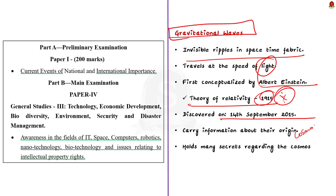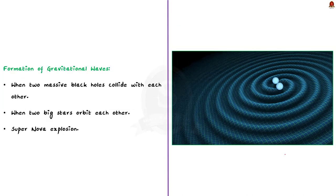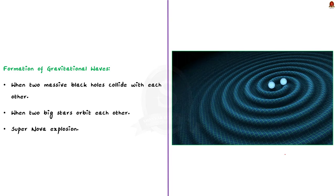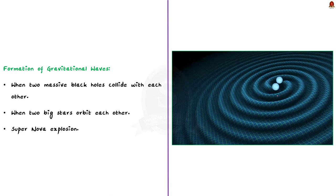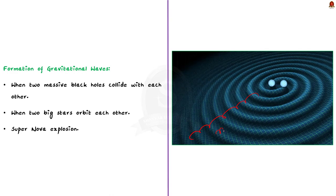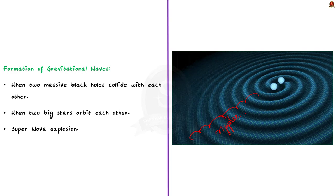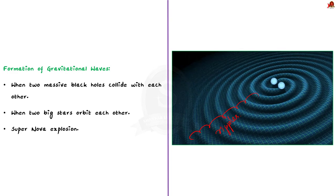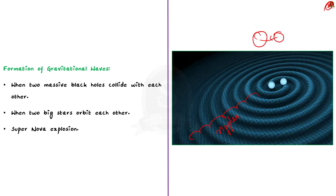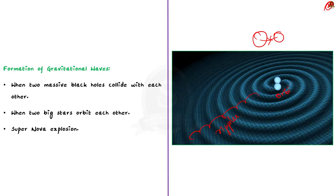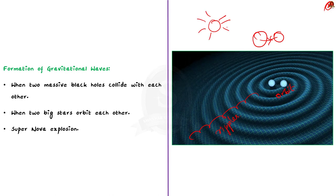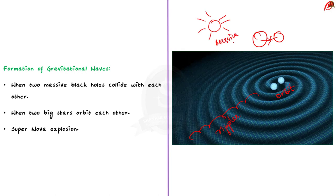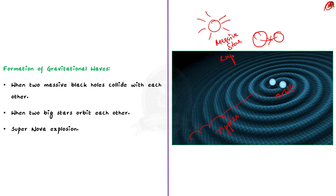Gravitational waves are formed due to ripples caused in the space-time fabric under different conditions. Those conditions include: firstly, when two massive black holes collide with each other; then, when two big stars orbit each other; and finally, when a supernova explosion occurs — which is nothing but the explosion of a massive star. It took over a century to detect gravitational waves because these waves are formed in far-away places, making detection a big challenge for scientists.